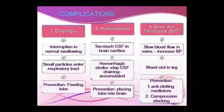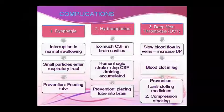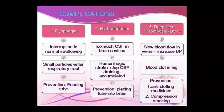If stroke causes complications, then dysphagia, hydrocephalus, and deep vein thrombosis may occur. Dysphagia is swallowing difficulty — a feeding tube can be used to manage this. Hydrocephalus means water accumulation in the brain cavities due to extra cerebrospinal fluid from hemorrhagic stroke, which will cause further accumulation. Deep vein thrombosis is another complication which must be addressed.